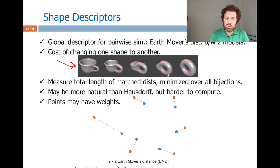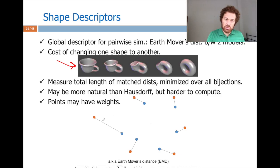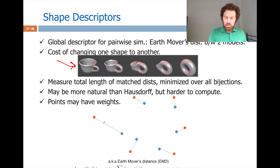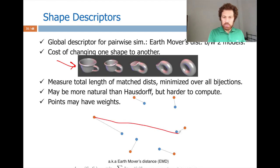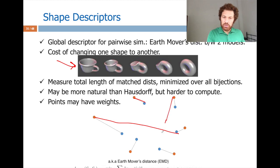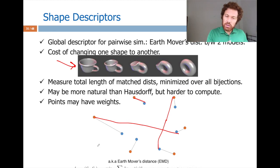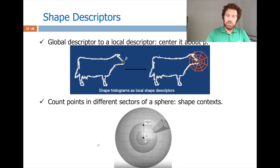Earth Mover's Distance (EMD) is the third way to compare point clouds and the most robust. It computes the cost of changing one shape distribution into another by finding the optimal one-to-one correspondence — bijection — between points. You enumerate possible correspondences, compute the sum of Euclidean distances for each, and select the permutation with minimum total cost. It is costly to compute but very robust once computed.